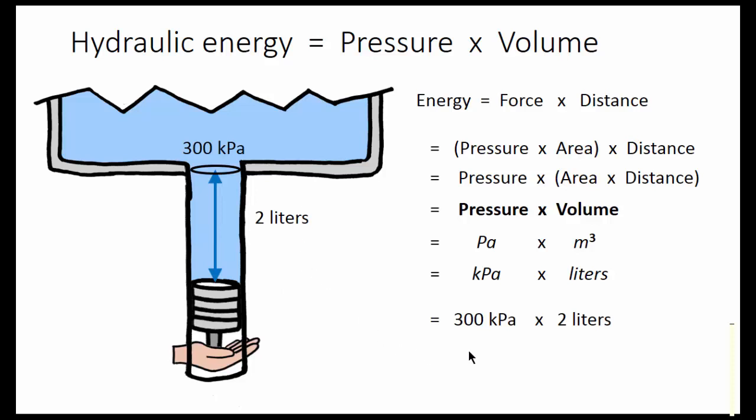If we have a displacement of 2 liters, and the pressure is 300 kilopascals, we have this much pressure, this much volume, and that's 600 joules of energy.